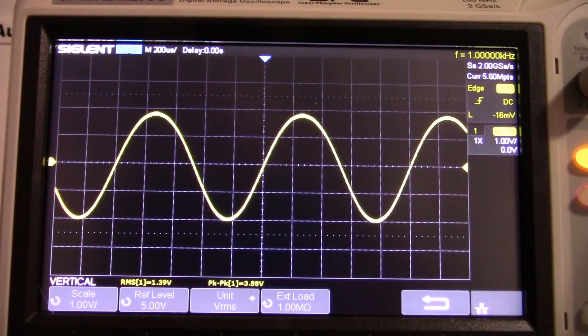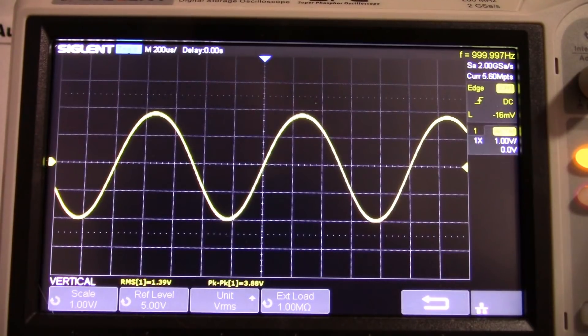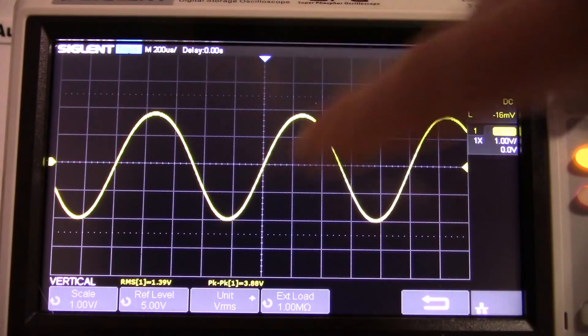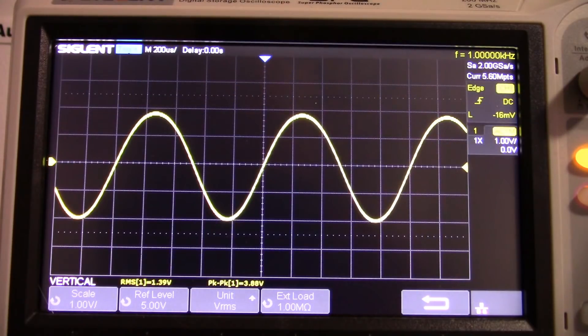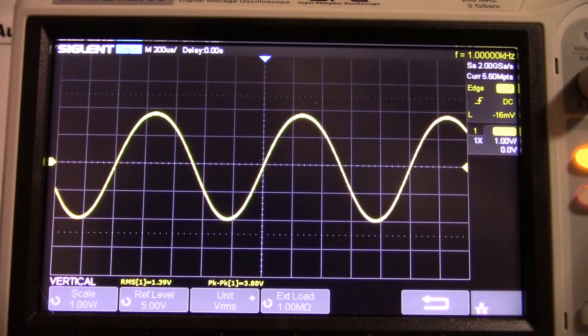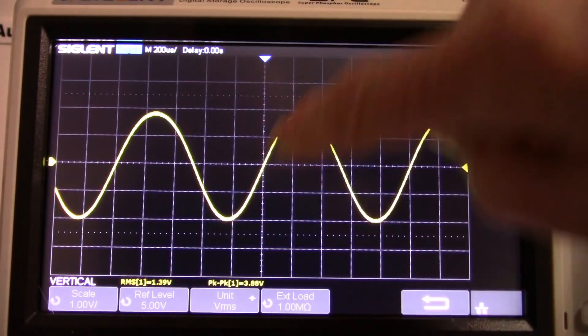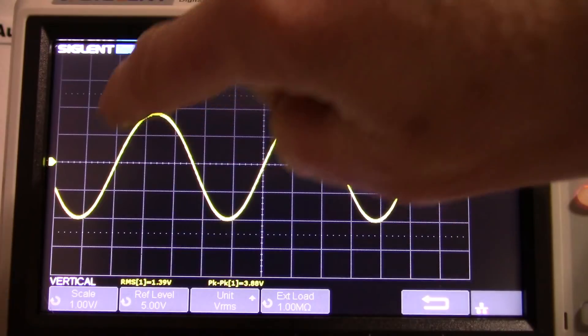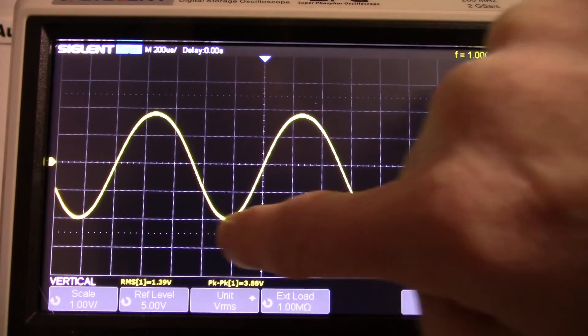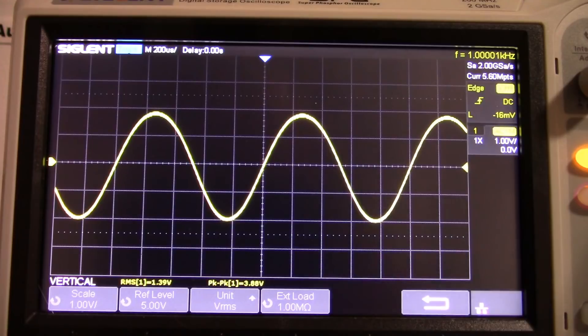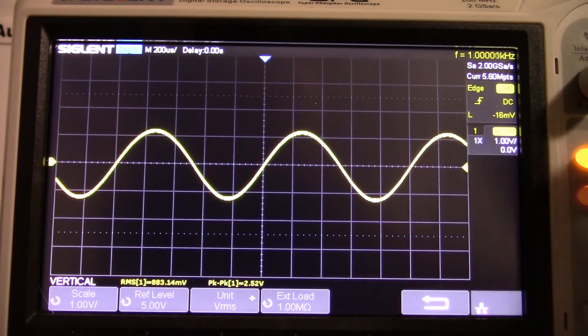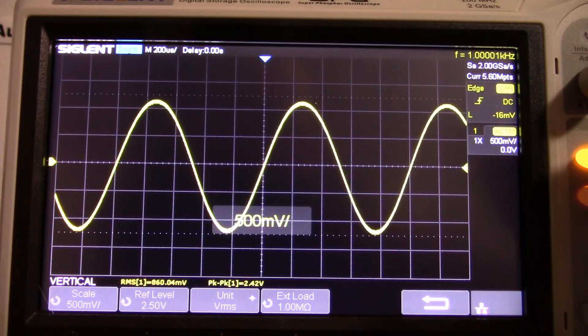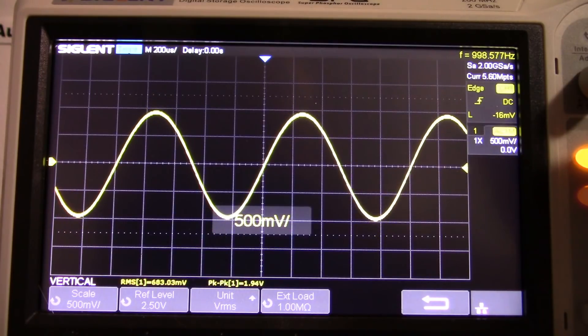Okay so I connected an 8 ohm load to the output and I'm scoping across the load. And there's our sine wave. And you can kind of see it's not perfect. It's a little more rounded on top, slightly more pointed on the bottom. That's a sign of second order harmonics, which I would certainly expect in an amplifier such as this. As I turn it down it'll look more like a sine wave at lower amplitudes.